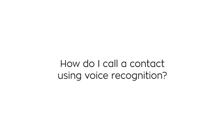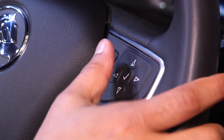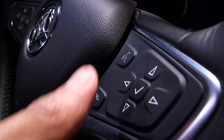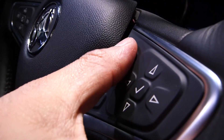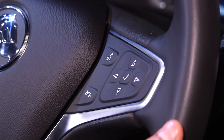How do I call a contact using voice recognition? Press the voice button on the steering wheel to start voice recognition. The system will ask, 'What would you like?' Then say, 'Call John Smith on mobile.'